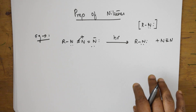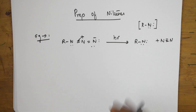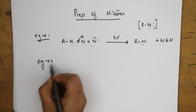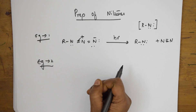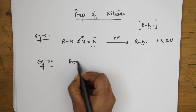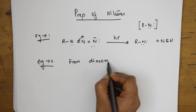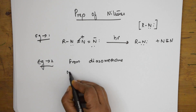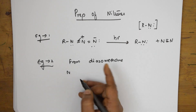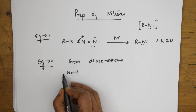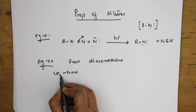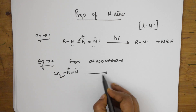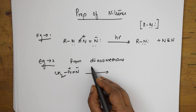Let us see one more example of nitrene preparation. I can also prepare nitrene from diazomethane. Diazomethane is CH₂=N⁺=N⁻ (or written as CH₂–N≡N with charges). When you introduce diazomethane in the presence of sunlight...